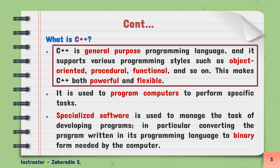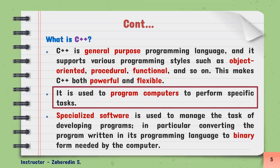For example, you may have one specific problem. By using the object-oriented programming paradigm you can solve that problem. By using a procedural paradigm you can also solve that specific problem. So generally a programming paradigm is a way or a method that helps us to solve a specific problem. This C++ programming language supports different methods or ways to help us solve that specific problem. It is also used to program computers to perform a specific task.